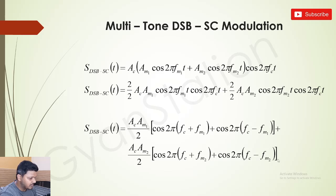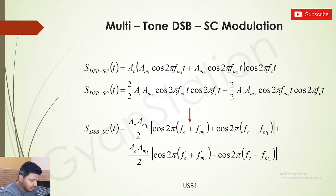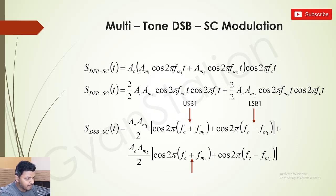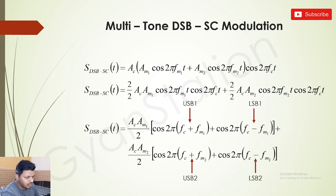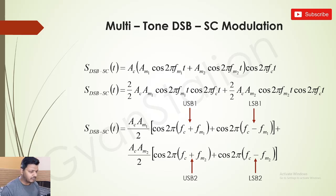Continuing, we also get (Ac·Am2/2)·cos(2π(fc+fm2)t) + (Ac·Am2/2)·cos(2π(fc−fm2)t). So fc+fm1 is USB1, fc−fm1 is LSB1, fc+fm2 is USB2, and fc−fm2 is LSB2 — because this is multi-tone, there are multiple LSBs and multiple USBs.